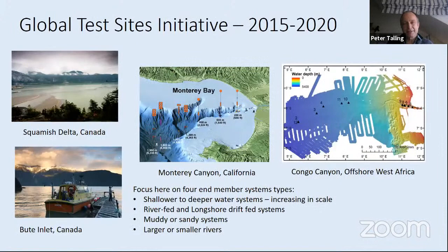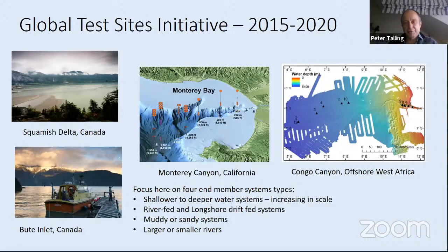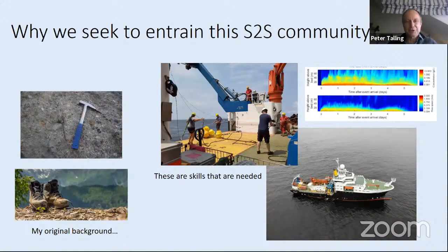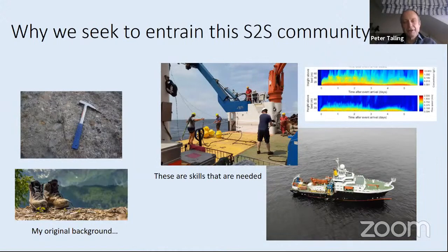I'll touch on information from four field sites: two in Canada, one in California—Monterey Canyon—and the Congo system off West Africa. They are rather different: three are fed by rivers, while Monterey is fed mainly by longshore drift. The types of rivers are different and the scales are very different—some are muddier, some are sandier. These are end members for understanding variability. It'd be a bit like getting the first data from four river systems globally and trying to understand rivers, but you have to start somewhere. Ideally, I'm trying to entrain the source to sink community into these efforts in the deep sea, because you have the field oceanography skill sets needed.